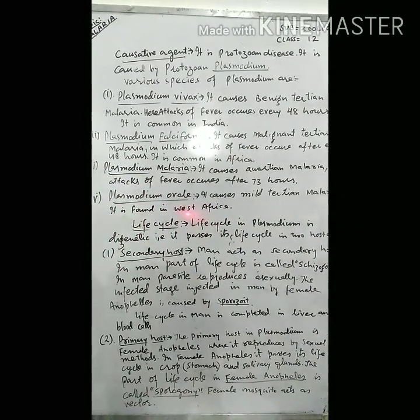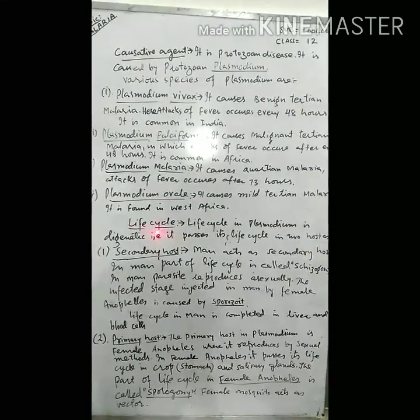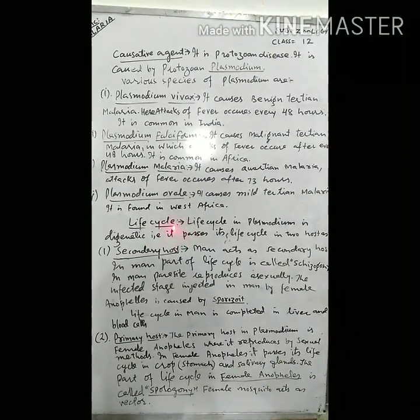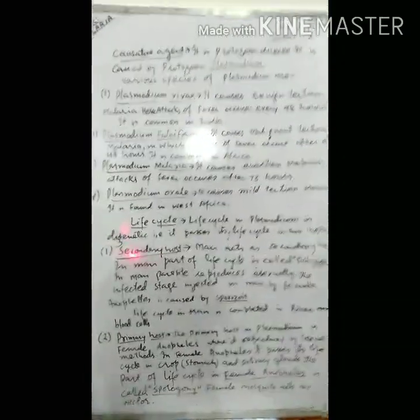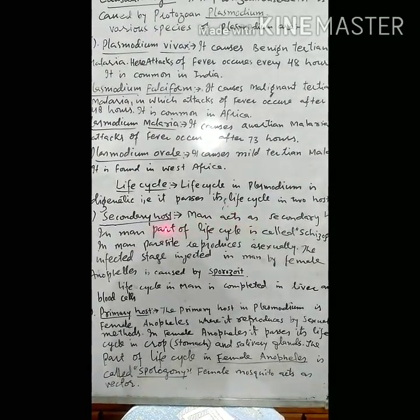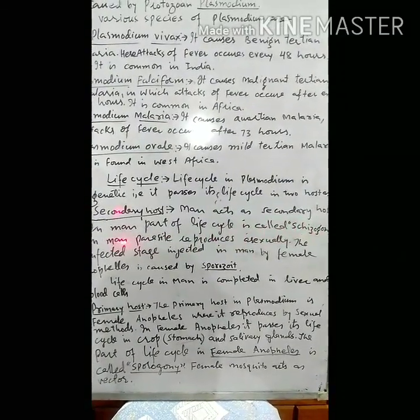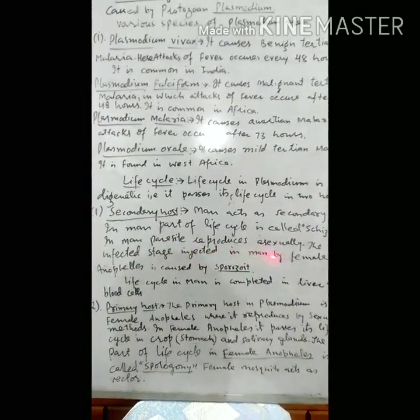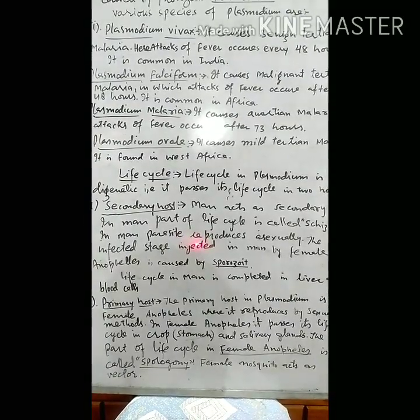As far as the life cycle is concerned, the life cycle of plasmodium is digenetic, meaning it completes its life cycle in two hosts. Man acts as the secondary host. In man, the part of the life cycle is called schizogony, where the parasite reproduces asexually. The infectious stage injected into man by the female Anopheles mosquito is the sporozoite.